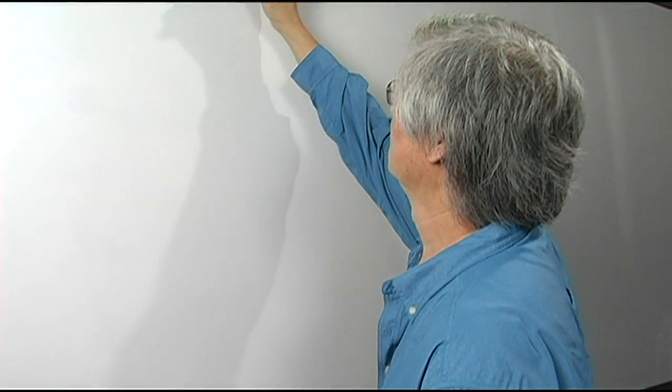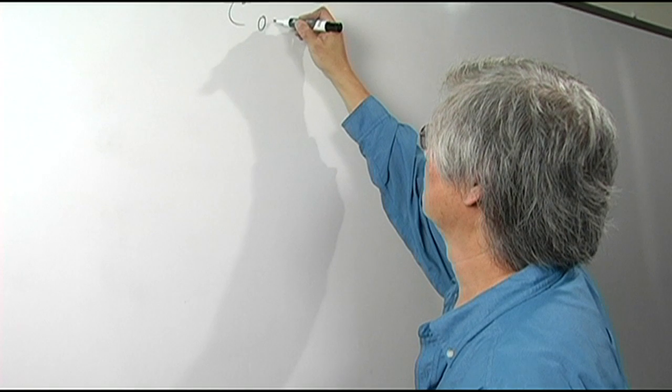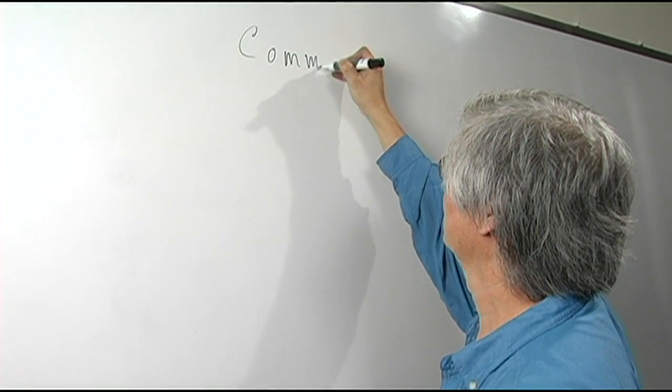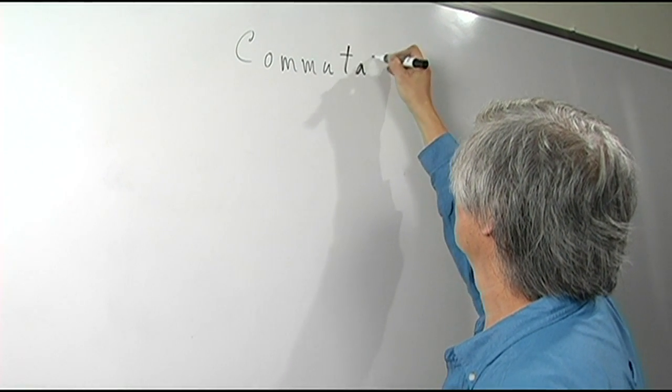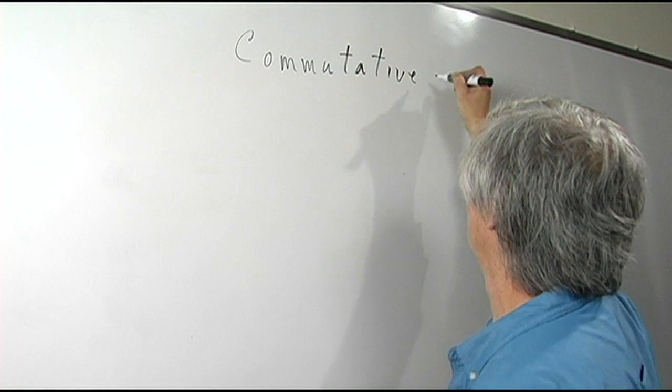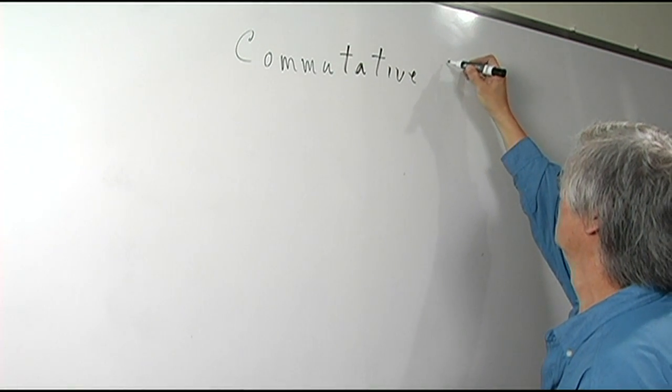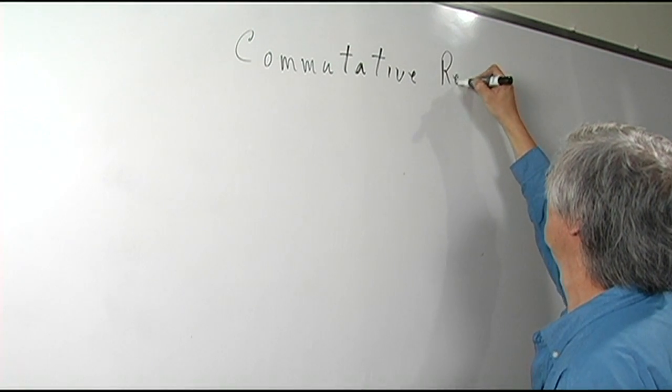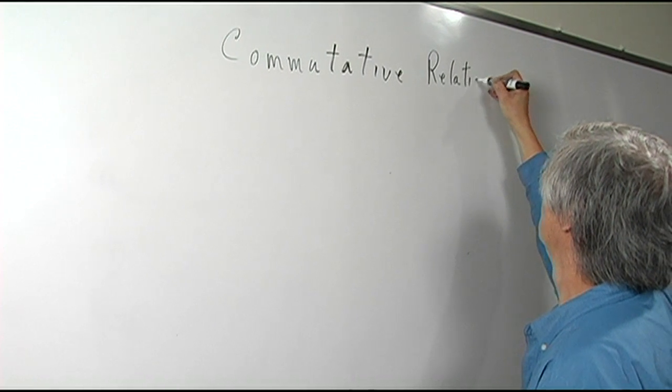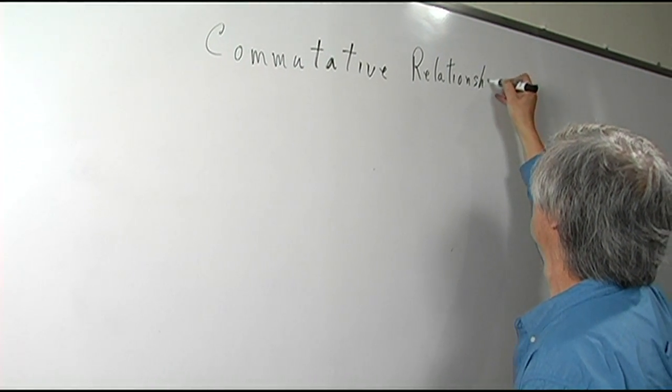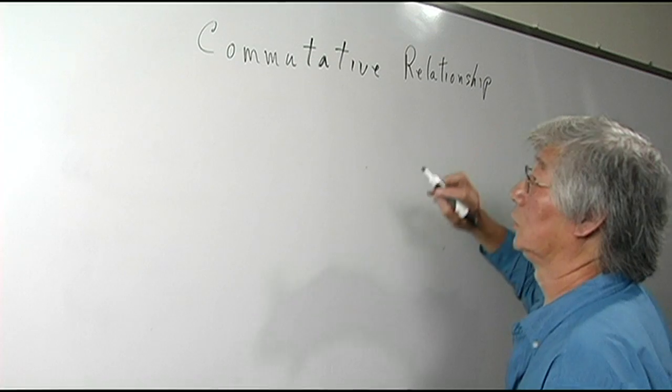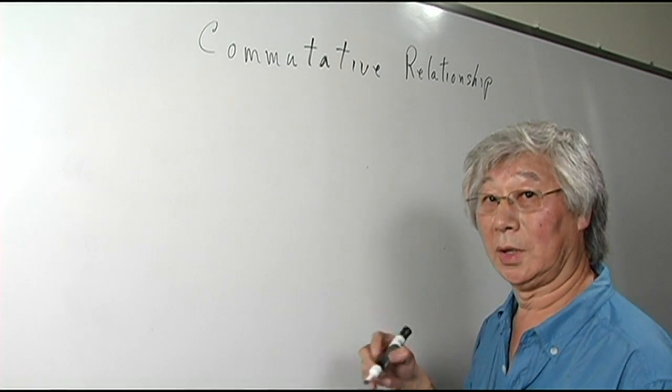Now we're going to talk about direction. We're talking about the commutative relationships, and there are two of them: multiplication and addition.